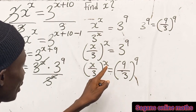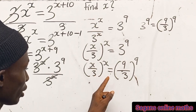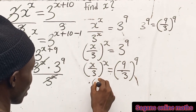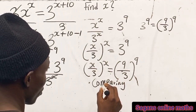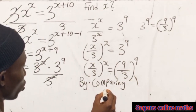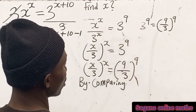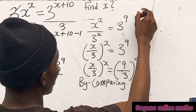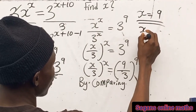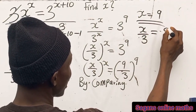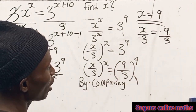Now let's compare both sides. The power on the left is x and the power on the right is 9. What you have inside on the left is s, and on the right is 9 — they are the same structure. So by comparing, we see that x equals 9, and therefore s equals 9.